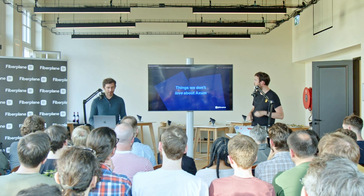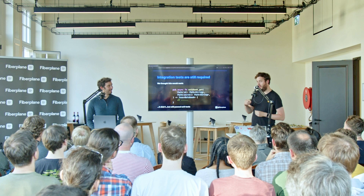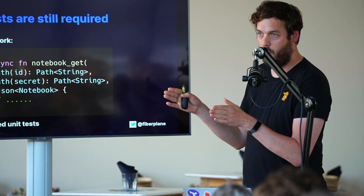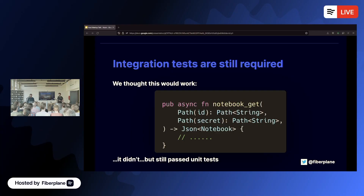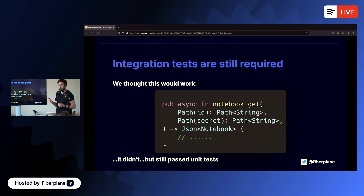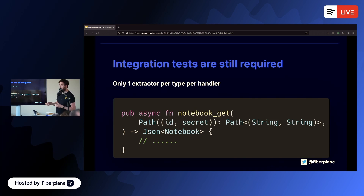One issue we came across while refactoring: we had a URL with multiple path parameters. We defined two separate path parameters — one being ID and one being secret — and our unit tests were passing fine. But when we ran in production we got weird errors. It turns out multiple path parameters don't work unless you define them as a tuple. This is a case where unit tests pass but integration tests are still important — you need to spin up your entire server, make requests, and see if everything's working.